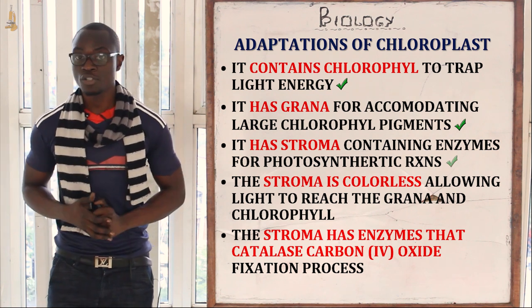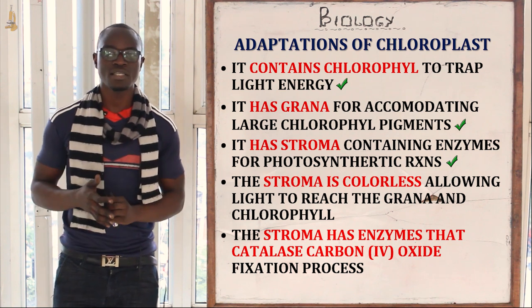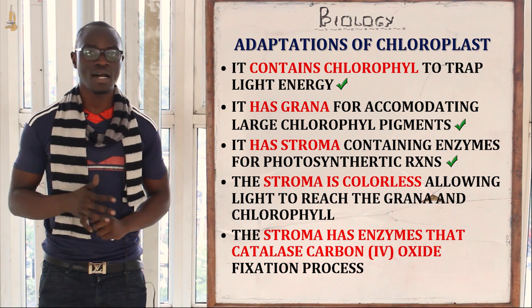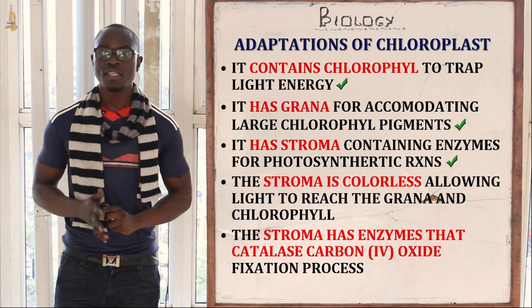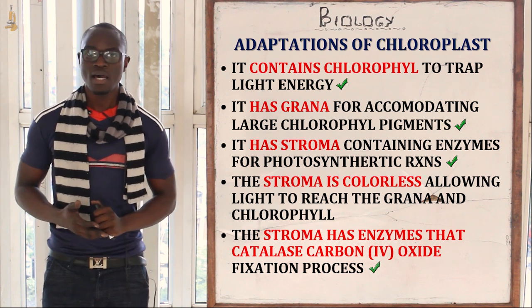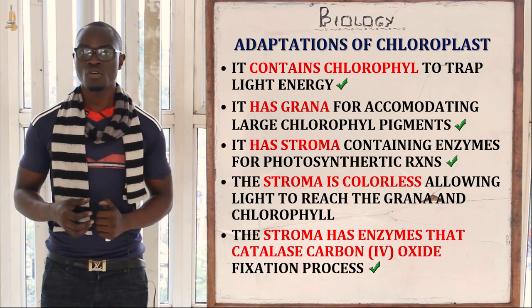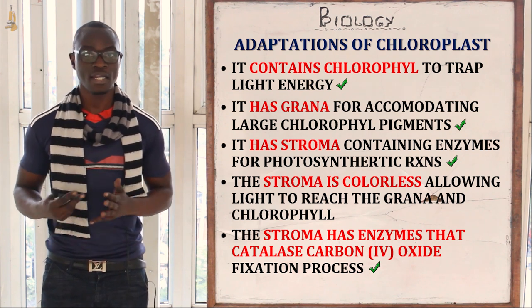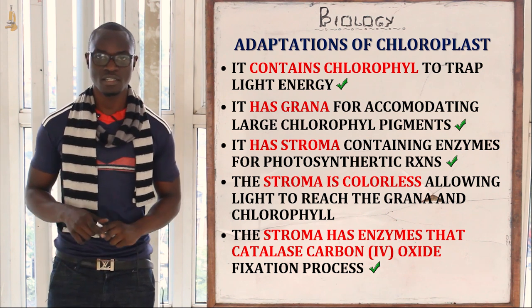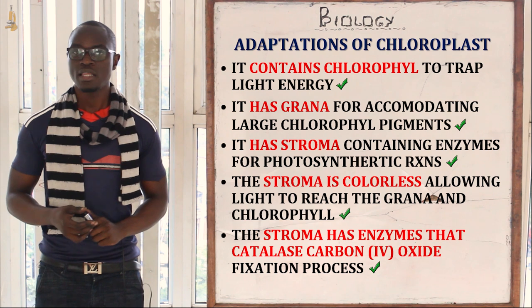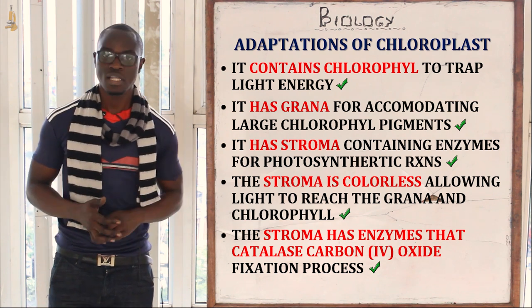The other adaptation is that it has stroma which has enzymes responsible for photosynthesis — this is the dark stage. The enzymes in the stroma are responsible for carbon dioxide fixation. Finally, the stroma is transparent so as to allow maximum sunlight to reach the grana.